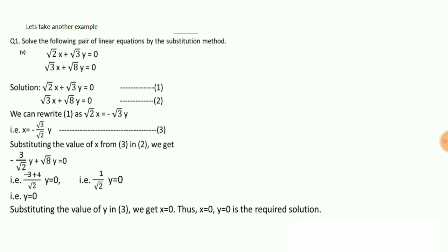The first equation can be rewritten as root 2x equal to minus root 3y, which gives x equal to minus root 3 upon root 2 times y. Substituting this value of x in the second equation, we get minus 3 upon root 2 plus root 8 times y equal to 0. That simplifies to minus 3 plus 4 upon root 2 times y equal to 0, which gives 1 upon root 2 times y equal to 0, meaning y equal to 0. Putting y equal to 0 in the expression for x, we get x equal to 0. Thus, x equal to 0 and y equal to 0 is the required solution.